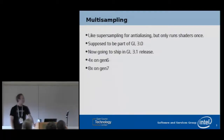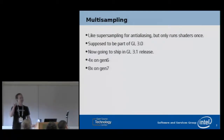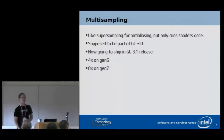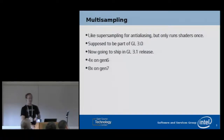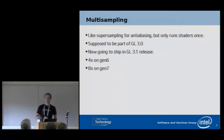One of the most important features for the next Mesa release is multisampling. Multisampling is like doing supersampling to get anti-aliasing, except that we only run your fragment shaders once for the whole pixel. You get partial coverage that gives you anti-aliasing effects, but it avoids costing a bunch of extra computation. It still sucks up a lot more memory and eats more memory bandwidth, so there's a pretty significant cost — we've measured about a 50% performance hit from turning on multisampling.